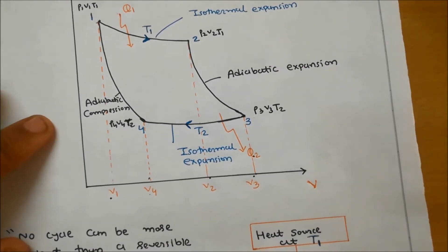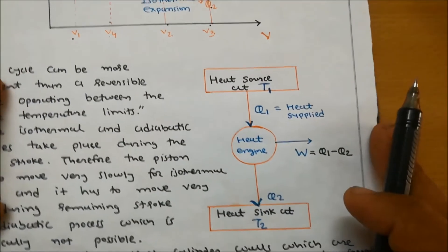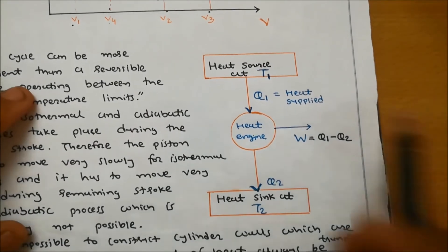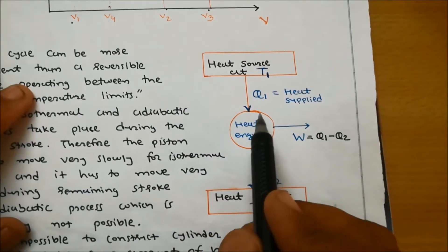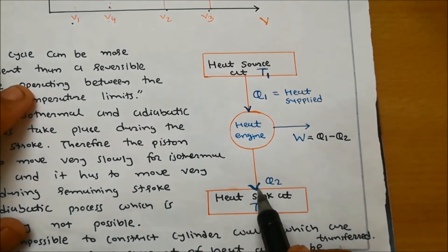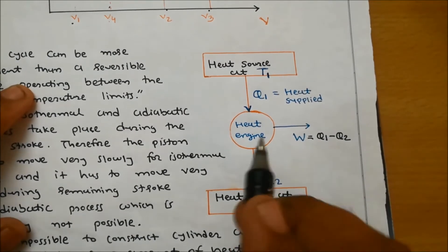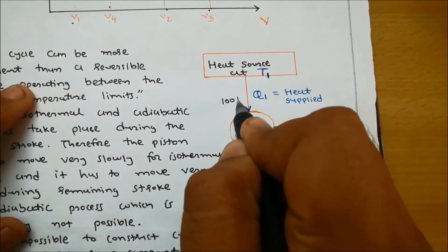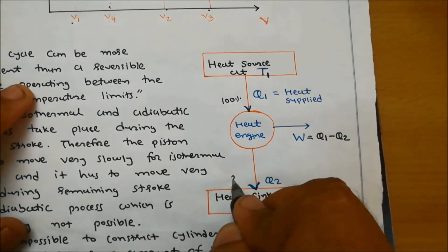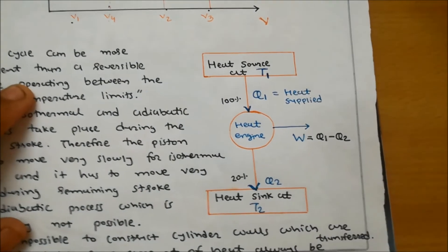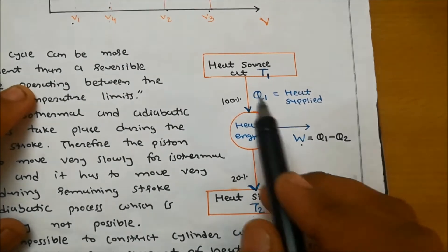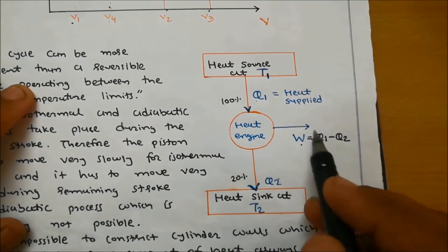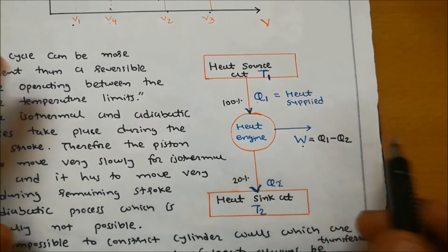The Carnot cycle operates between two temperature limits: T1 (heat source) and T2 (heat sink). Heat Q1 is supplied to the heat engine and some amount of heat Q2 is rejected to the heat sink at T2. For example, if 100% heat is supplied and 20% is rejected, work done is 80%. Therefore, work done W = Q1 minus Q2.